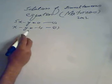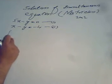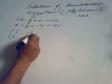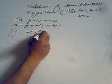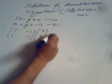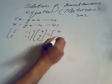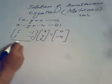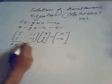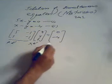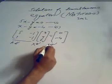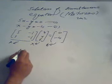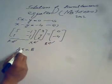First of all we will convert these two equations into matrix form, and it would be [5, -1; 1, -1] times [x; y] equals [0; -4]. We name these matrices: suppose this matrix is A, this is X, and this is B. Then the equation becomes AX = B.